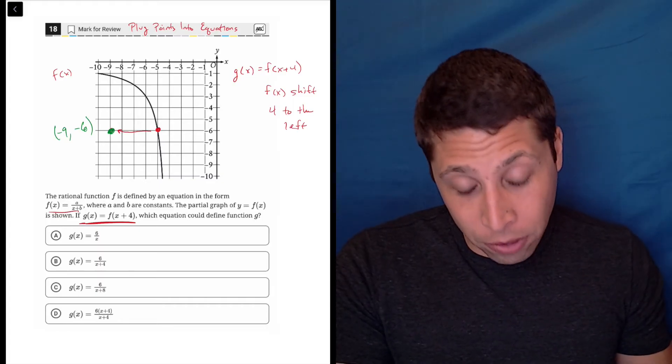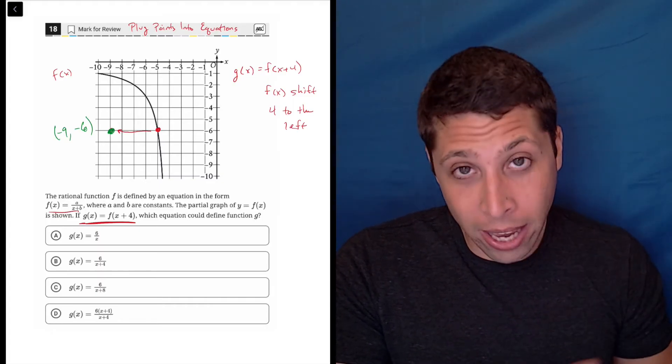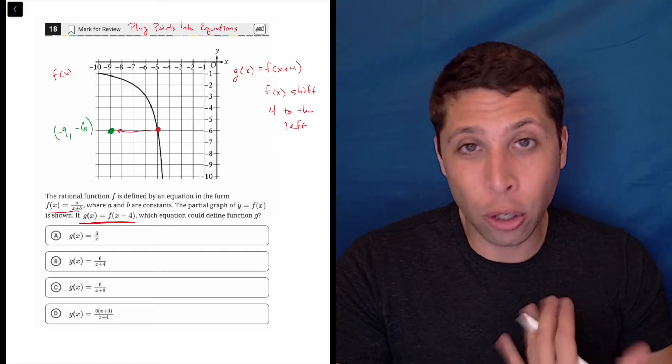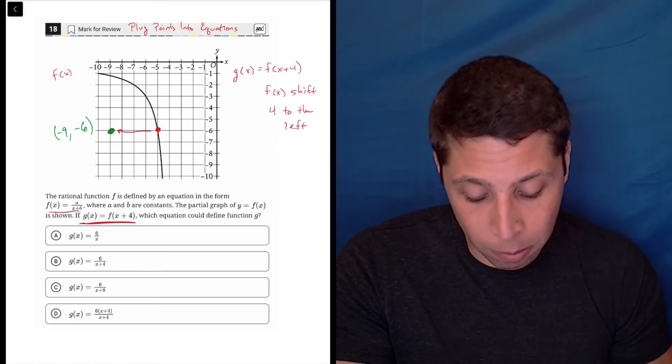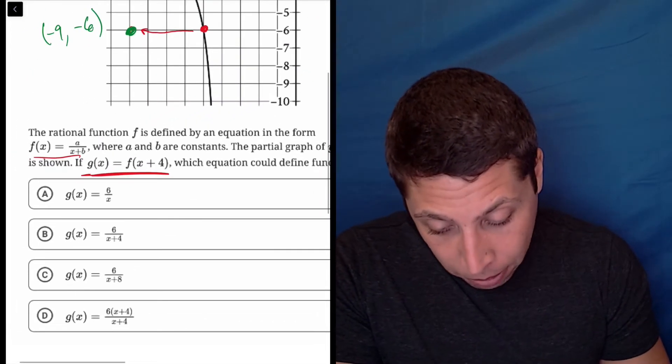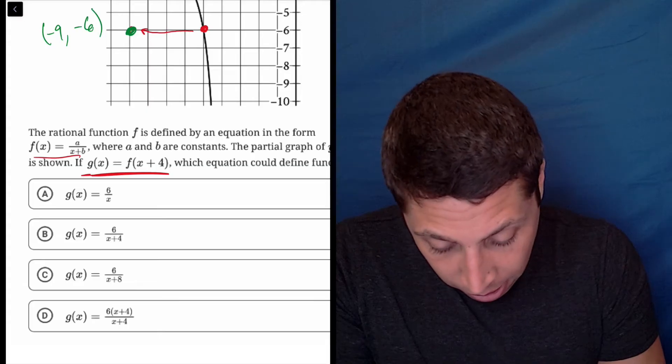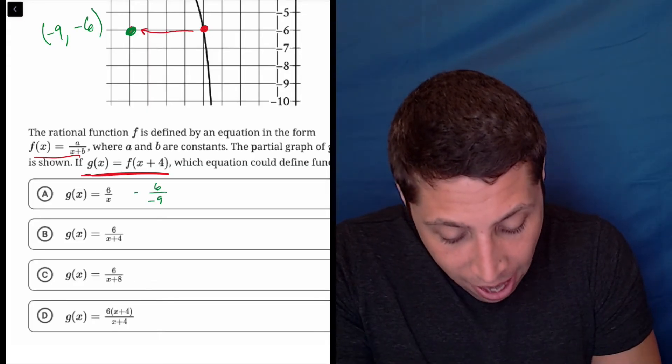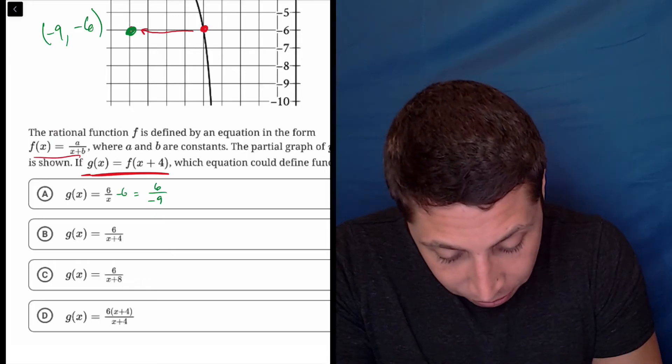So all we have to do now is take that negative nine, negative six, and try it out in these equations and see if this is truly an equation of the g graph. It should include this point. So, if I look at choice A, and I plug that in,